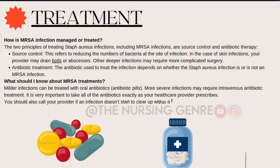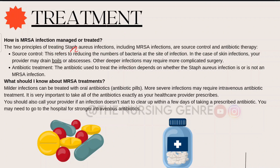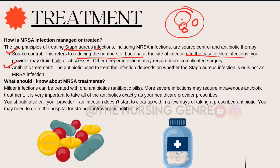MRSA infections are managed through two principles: source control and antibiotic therapy. Source control refers to reducing the number of bacteria at the site of infection — for skin infections, a provider may drain boils or abscesses, while deeper infections may require surgery. Antibiotic treatment depends on whether the staph aureus infection is or is not MRSA.